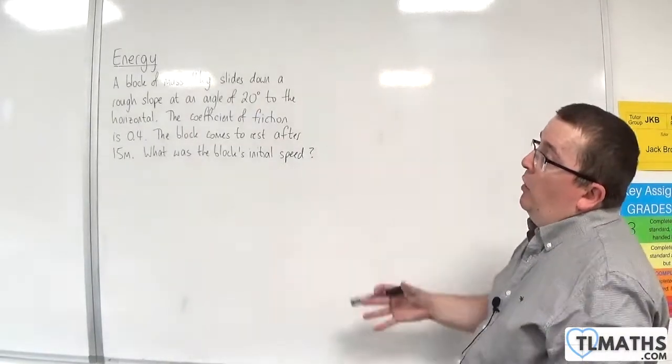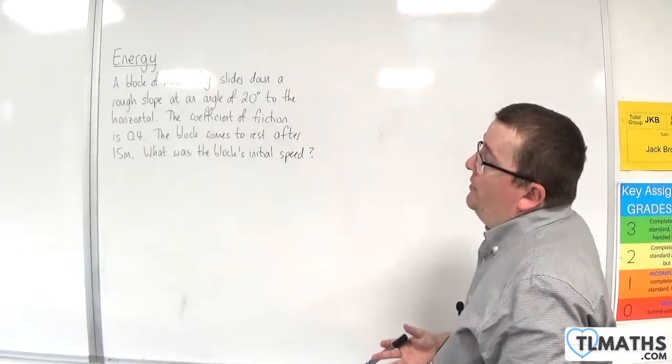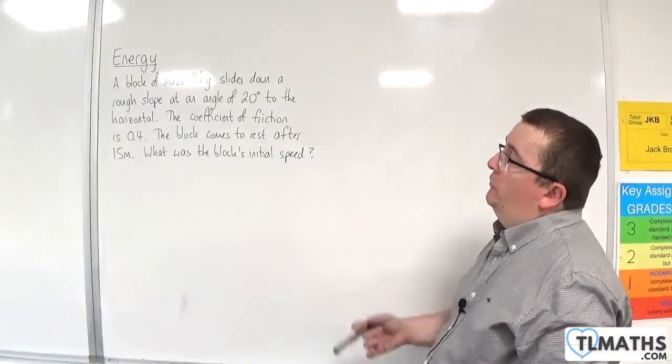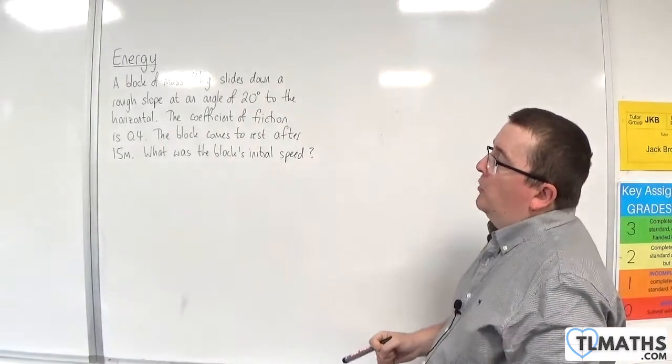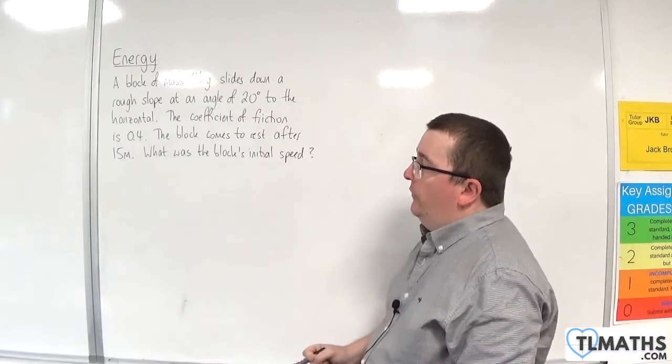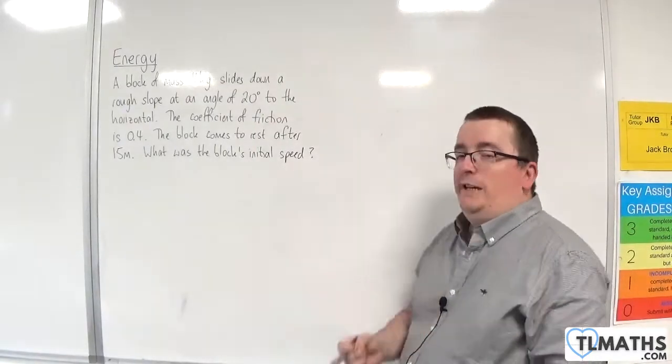So, in this problem, we have a block of mass 4 kilos that slides down a rough slope at an angle of 20 degrees to the horizontal. The coefficient of friction is 0.4. The block comes to rest after 15 meters. What was the block's initial speed?